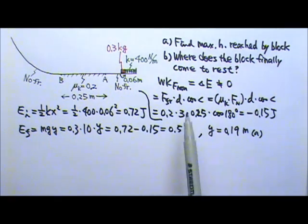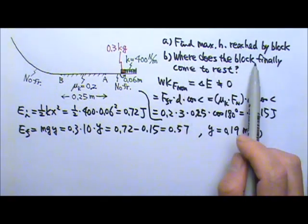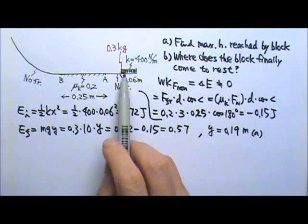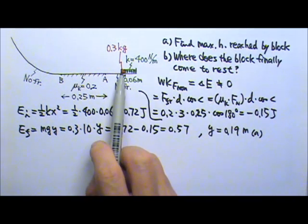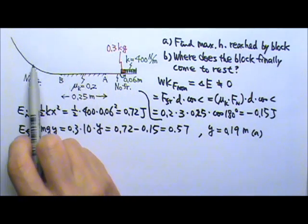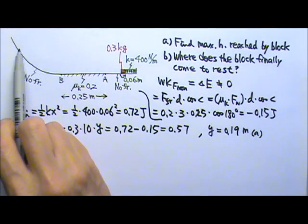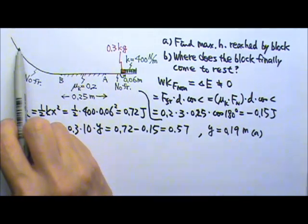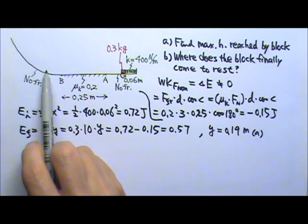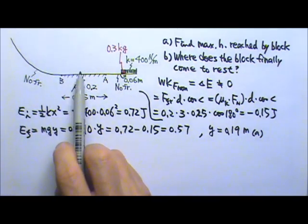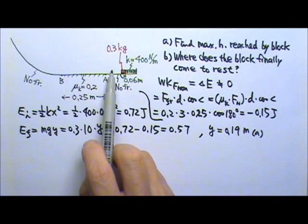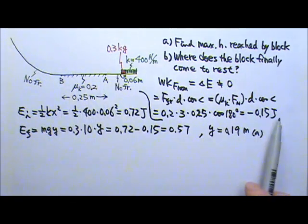In part B, we want to find where the block finally comes to rest. Let's see, what happens is that this block is going to go to this side, go to the maximum height, 0.19 meters, and then slides back down, go through this region with friction again, losing some more energy.